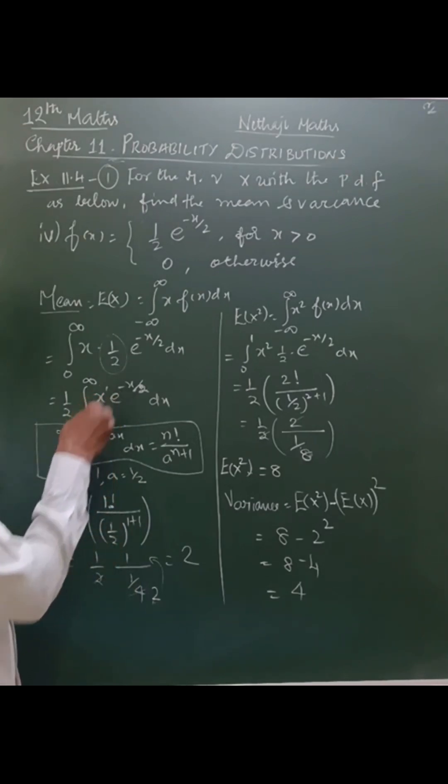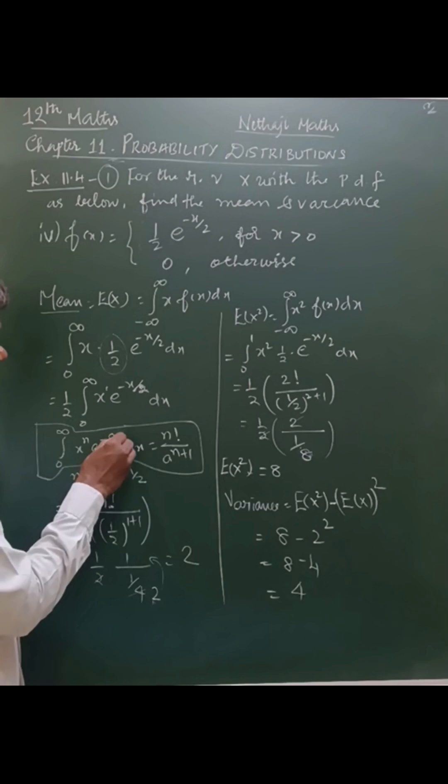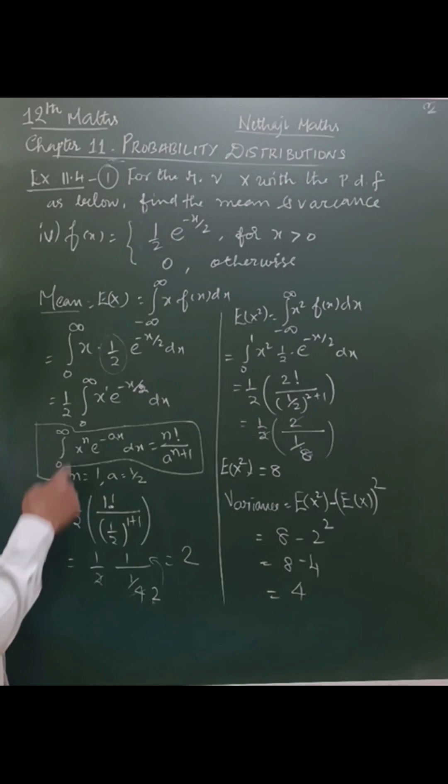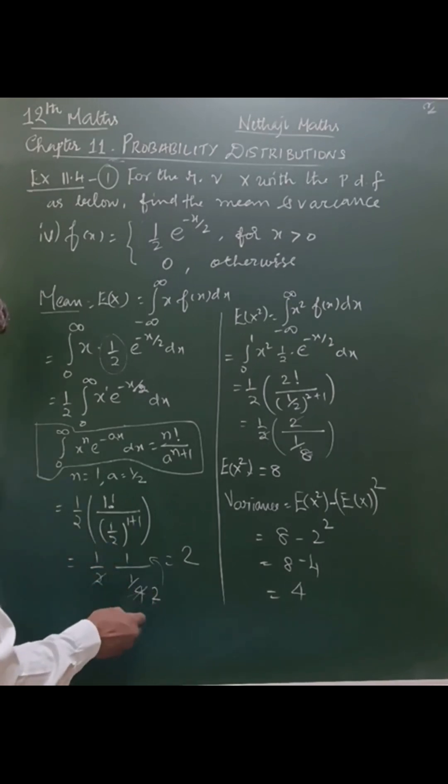In the comparison, n is greater than or equal to 1, a is greater than or equal to one-half. So a equals one-half. Now apply the formula: one-half into 1 factorial by one-half power 1 plus 1, that is one-half squared, that is one-fourth. The 2s cancel out, so this gives 2. This is the mean.